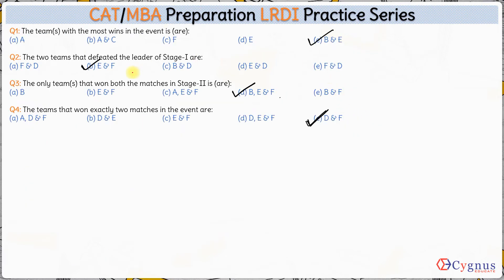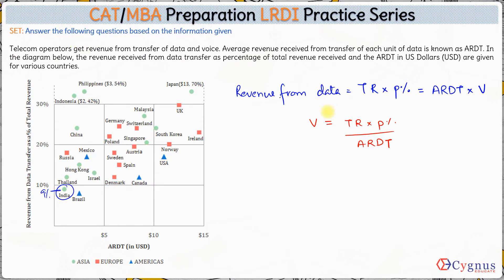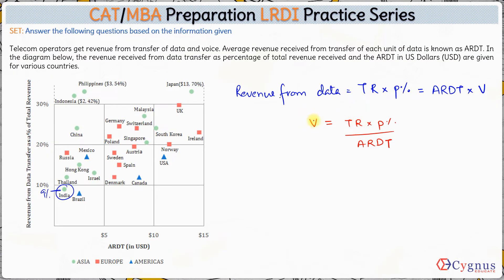Now we have to figure out, for the first option — Philippines and Australia — if total revenue is the same for both countries, will the volume also be the same? For volume to be the same, given that total revenue is already the same, we need the ratio P% / ARDT to be the same for both countries in the given pair.